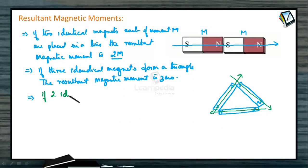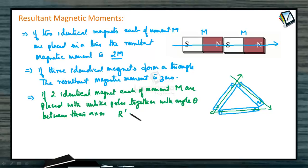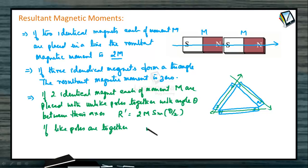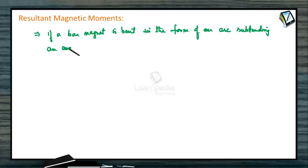If two identical magnets, each of moment capital M, are placed with unlike poles together at an angle theta between their axes, then the resultant magnetic moment will be equal to 2M sin(θ/2). If like poles are together, then the resultant magnetic moment will be 2M cos(θ/2).